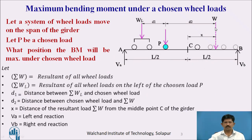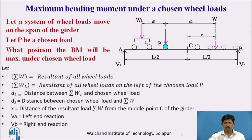Now, for maximum bending moment under the chosen wheel load, let us consider a load system moving here — it will be moving from A to B. Let P be the chosen load under which we have to find out the maximum bending moment. First we have to find out the resultant of all wheel loads, that is W. WL will be the resultant of all wheel loads to the left of the chosen wheel load. D1 is the distance between the resultant of left hand side load and the chosen wheel load. D2 will be the distance between the chosen wheel load and the resultant load. Let X be the distance of the resultant load from the middle center of the girder. VA is the left hand reaction and VB is the right hand reaction.